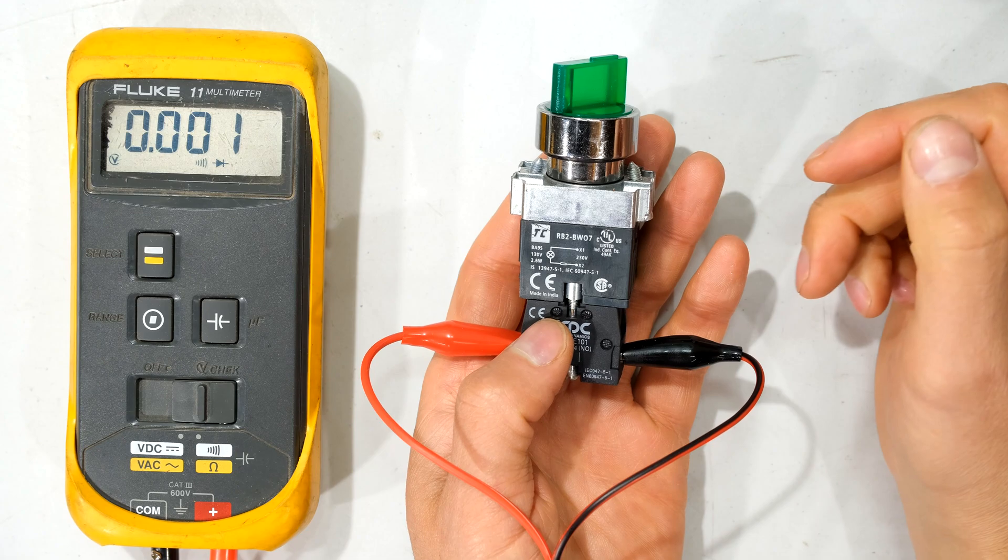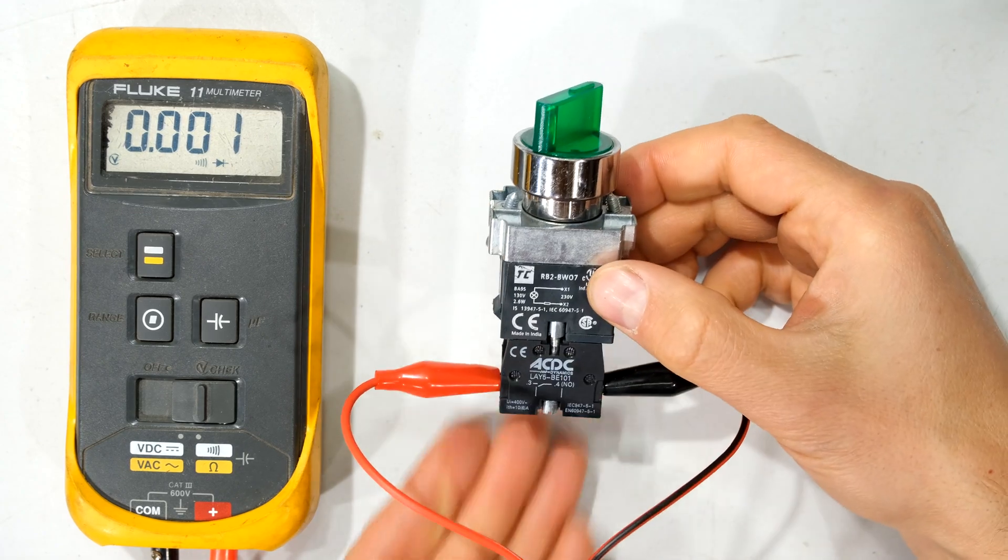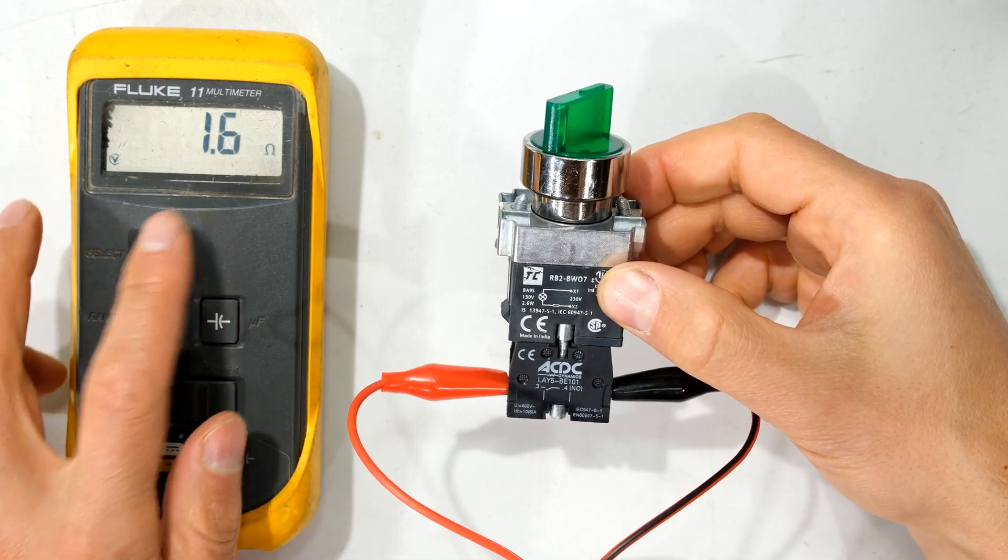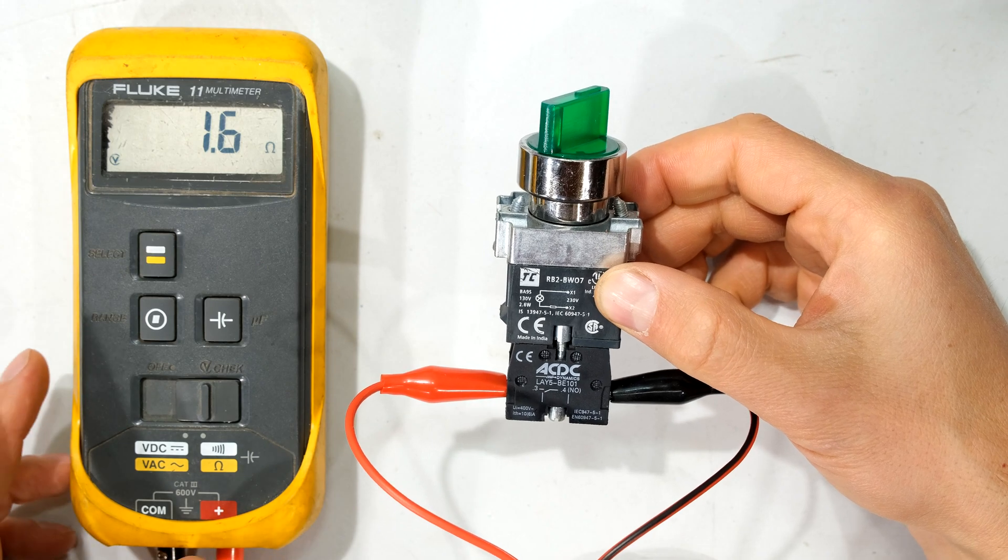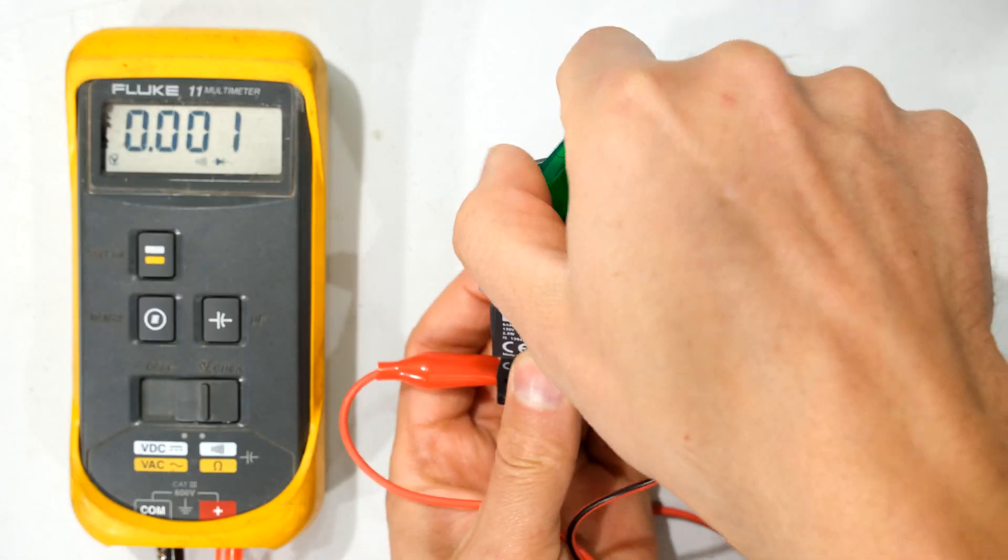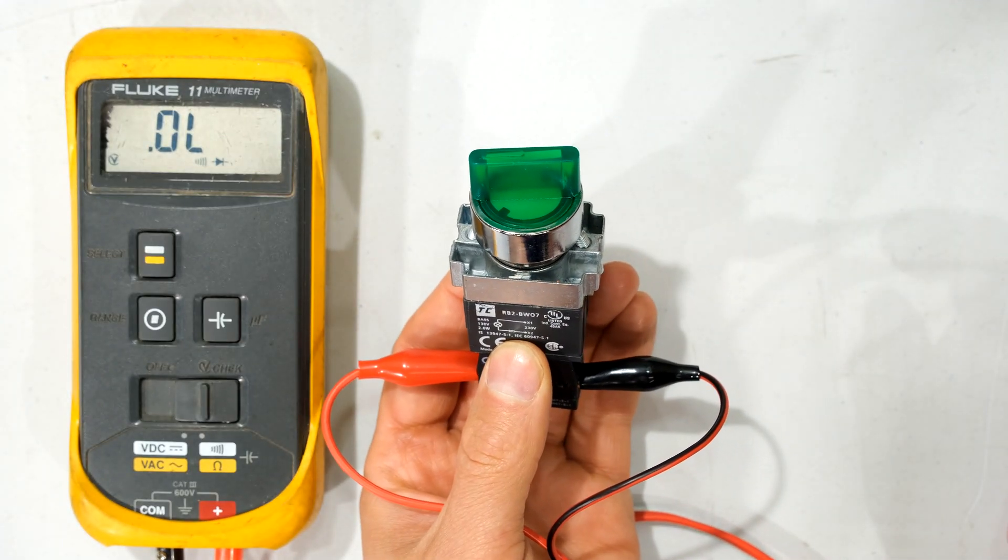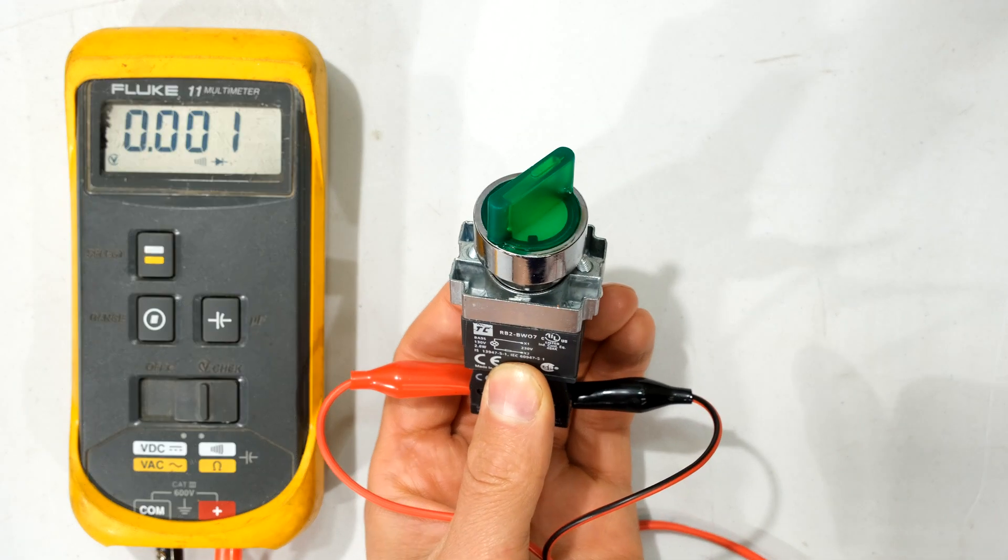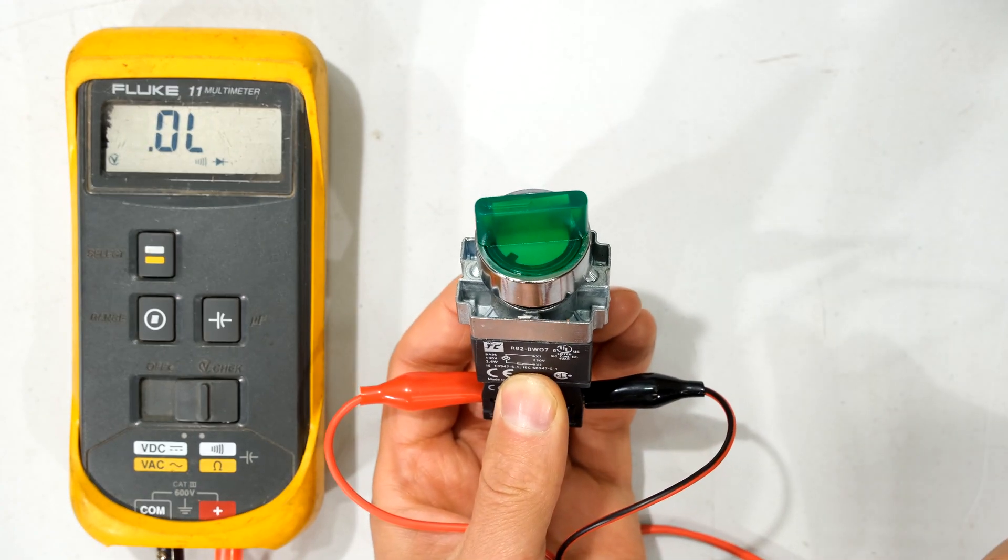As you can hear, my meter is making that buzzing sound, and if I show you the resistance, you can see that the resistance is below two ohms, so this is a short circuit. As I rotate the switch, you can see it's now an open circuit. Short circuit, open circuit.